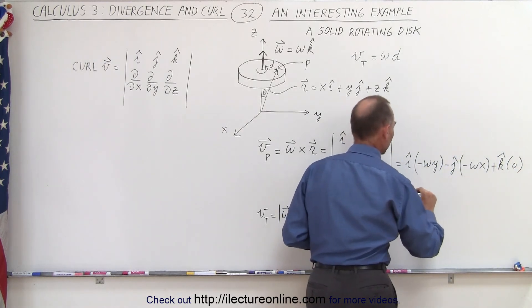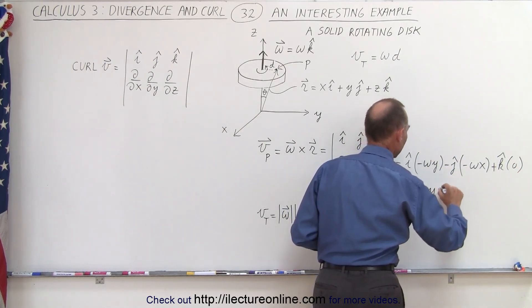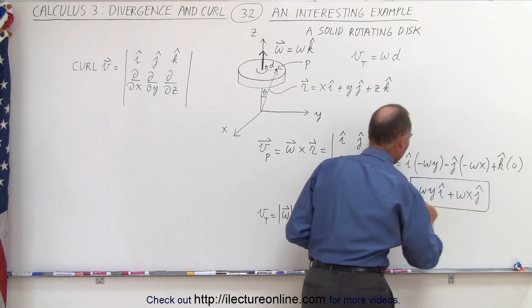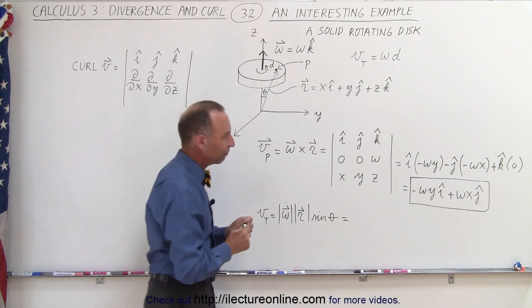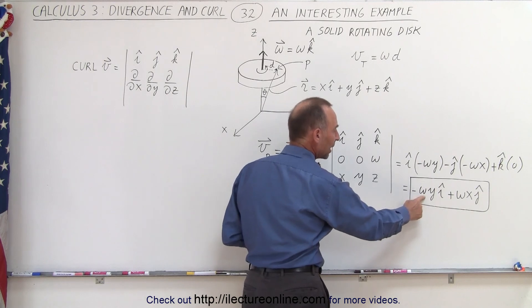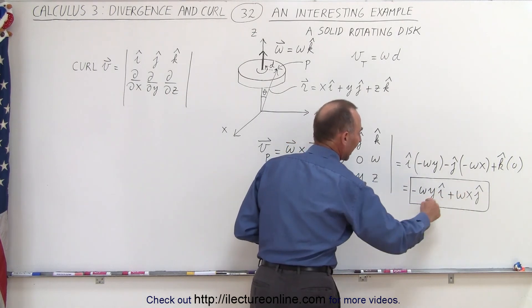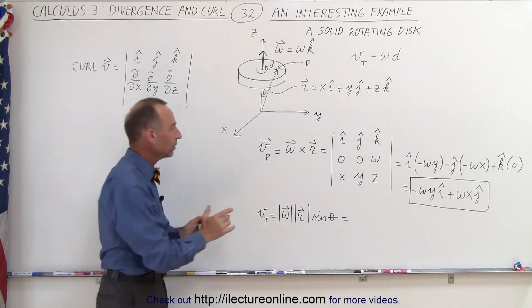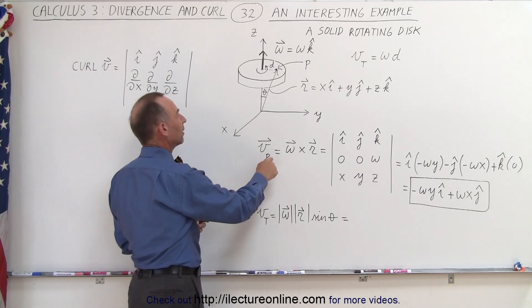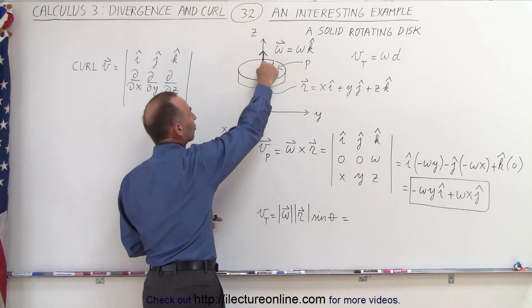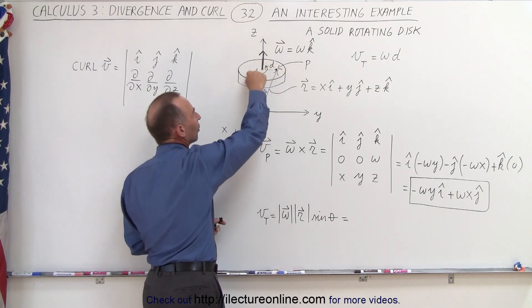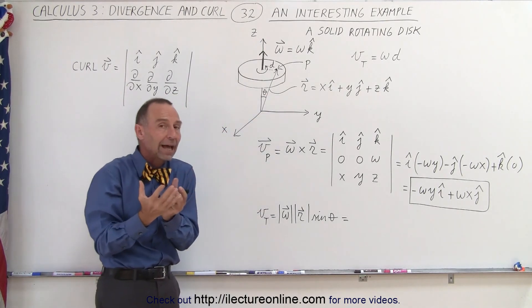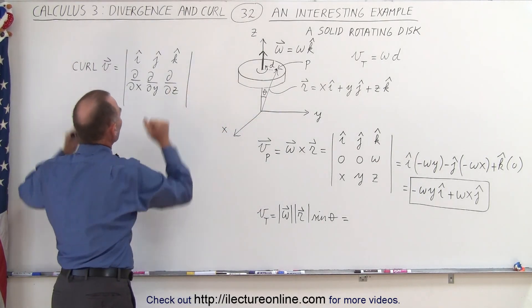So this equals −omega*y in the i direction plus omega*x in the j direction. This vectorially represents the velocity as a function of the rotational velocity omega and the position (x, y) relative to the x-y plane on the disk. That gives us the vector quantity representing the velocity. Notice this represents a vector field going around the z-axis, and when we take the curl of that we should get a meaningful result.